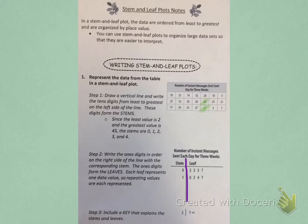So we're going to write zero, one, two, three, and four as our stems. Step two is to write the ones digits in order on the right side of the line with the corresponding stem. The ones digits form the leaves. Each leaf represents one data value, so repeating values are each represented.